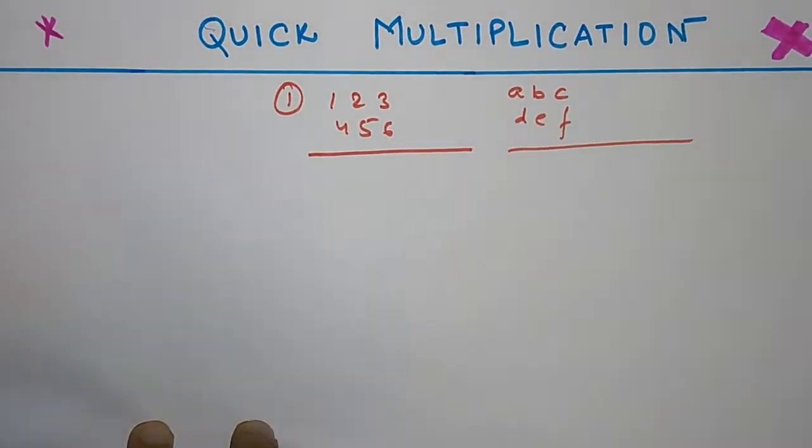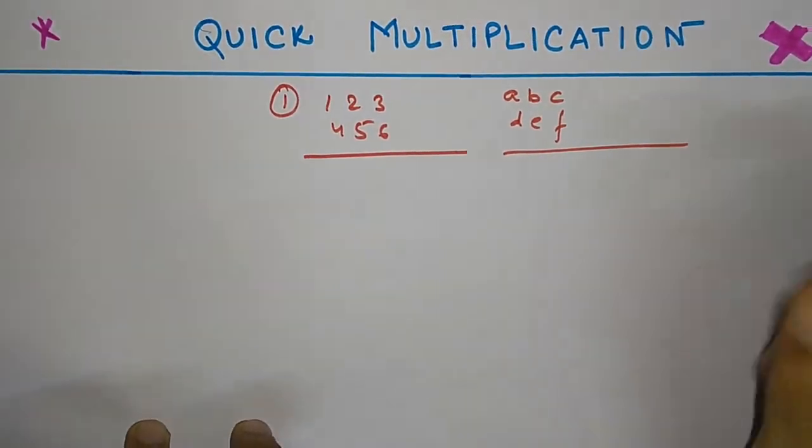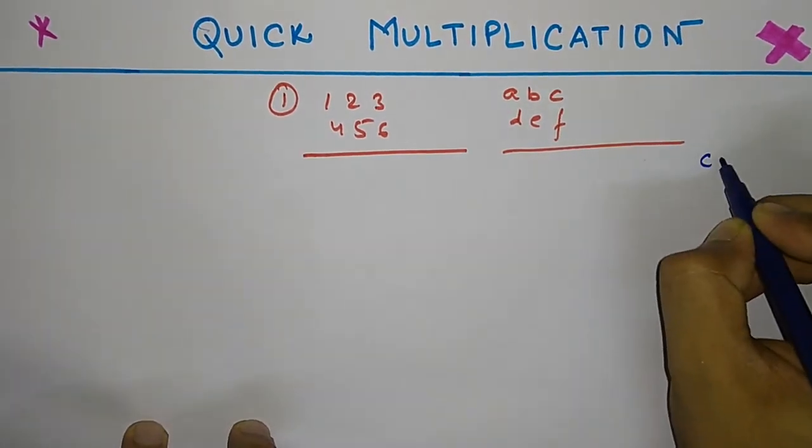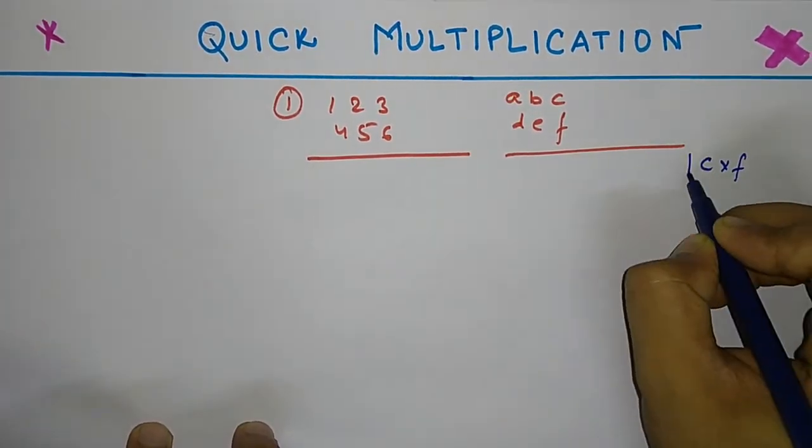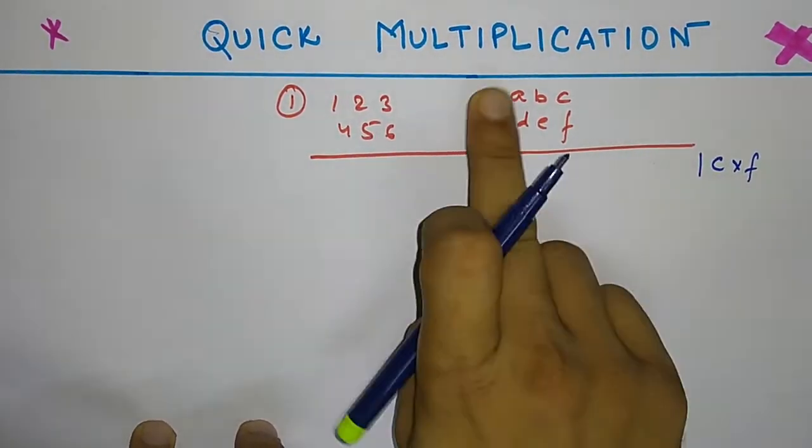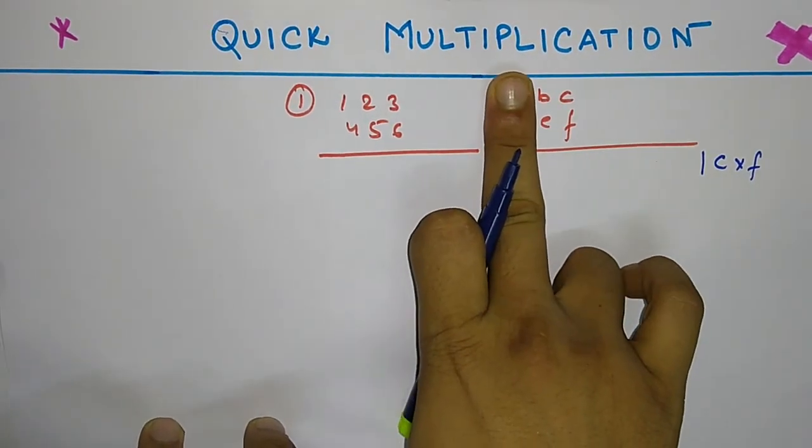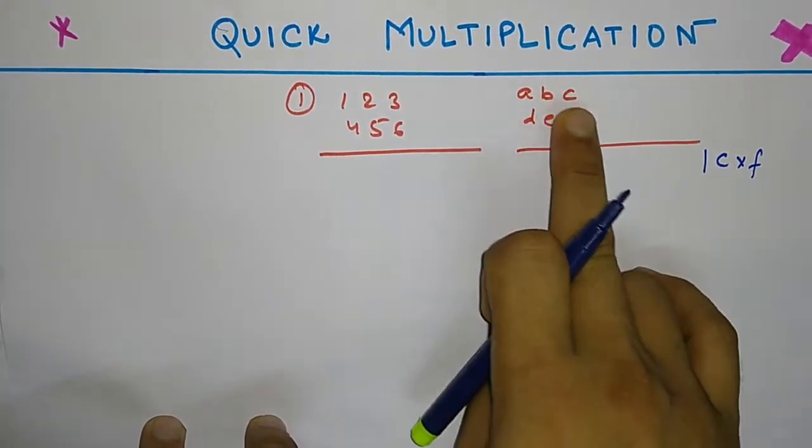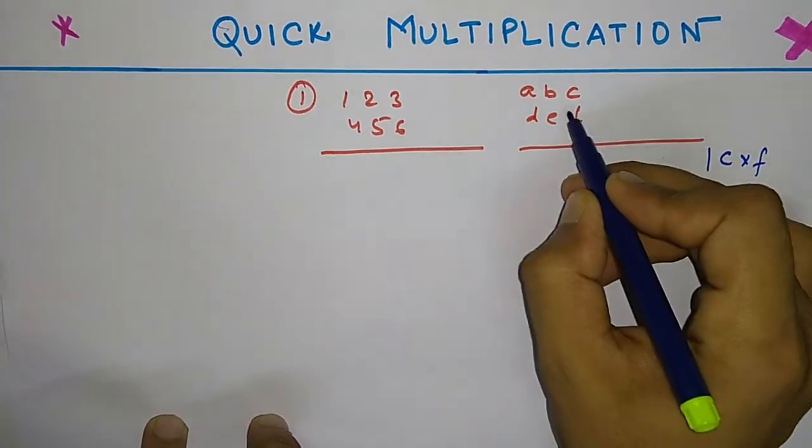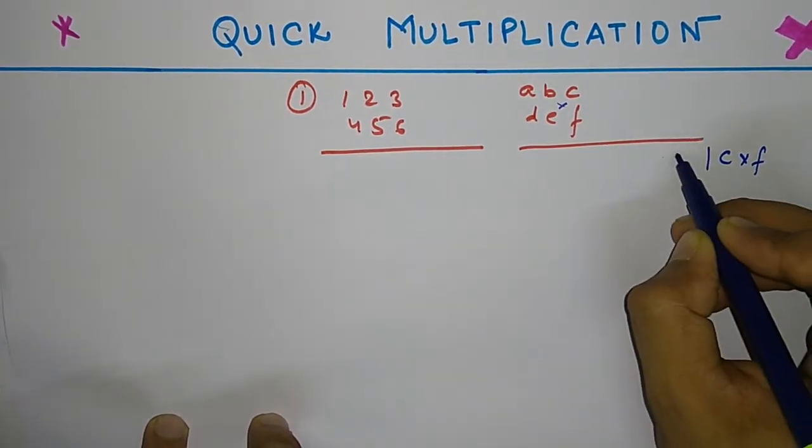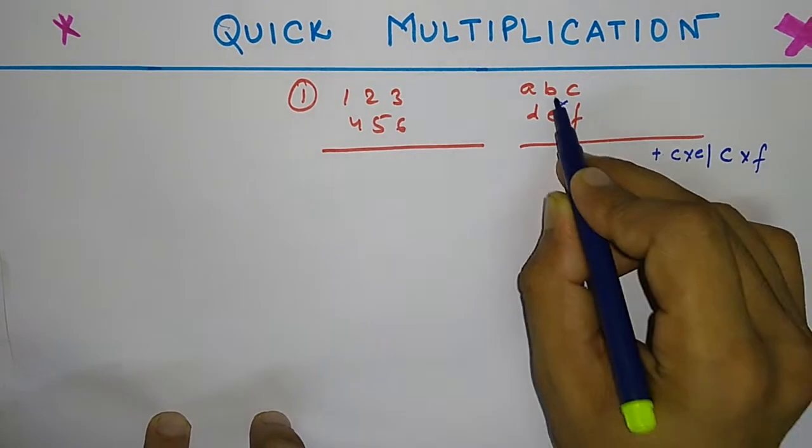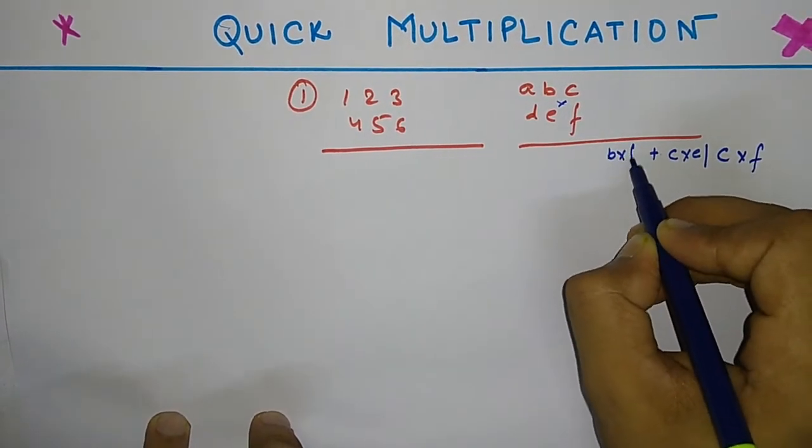Take the numbers as ABC and DEF. So the different blocks will be: first of all it will be C cross F. Then for the next one, forget this one, forget this part, and take these four numbers and multiply crosswise. So it will be C into E plus B into F.